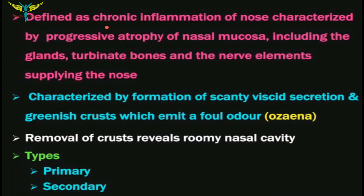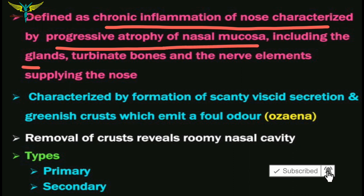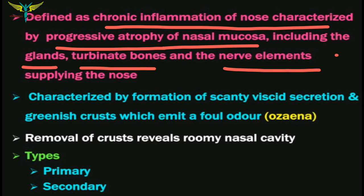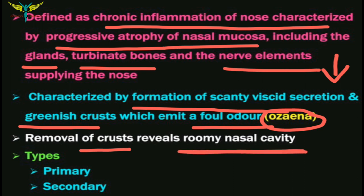Atrophic rhinitis is defined as a chronic inflammation of the nose characterized by progressive atrophy of the nasal mucosa, including the glands, turbinate bones, and even the nerve elements, leading to decreased smell sensation. This inflammation is characterized by formation of scanty viscid secretions that form green colored crusts which emit a foul odor. The disease is also known as ozena because of the foul smell and greenish crusts. Removal of these crusts reveals a roomy nasal cavity due to atrophy of the nasal mucosa, turbinates, and glands.